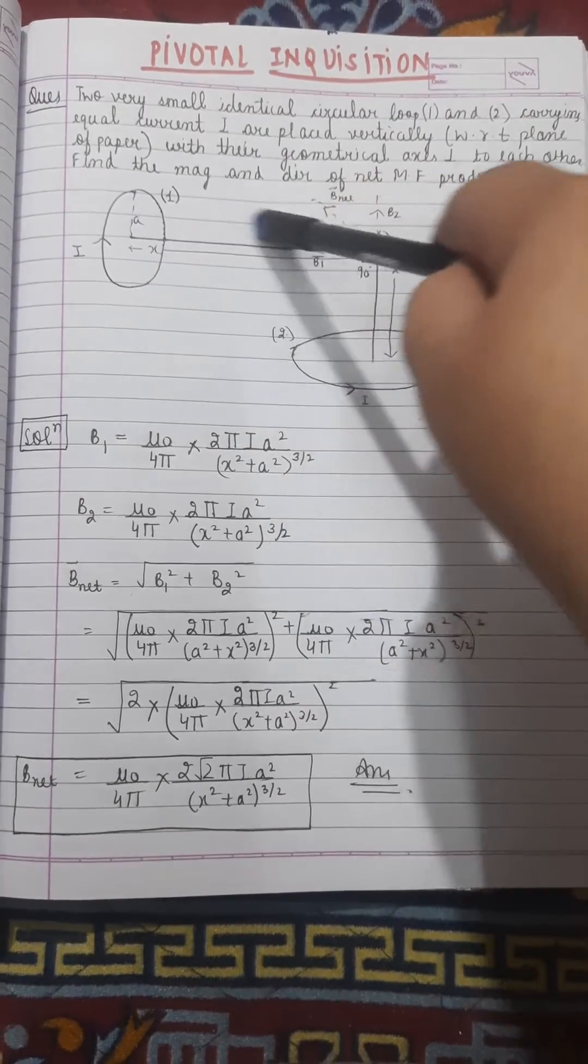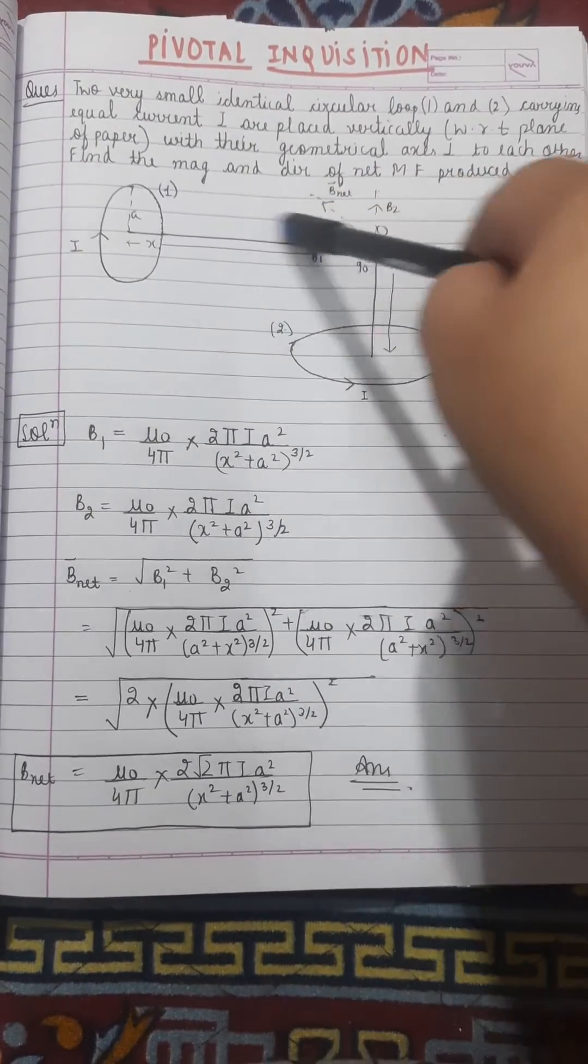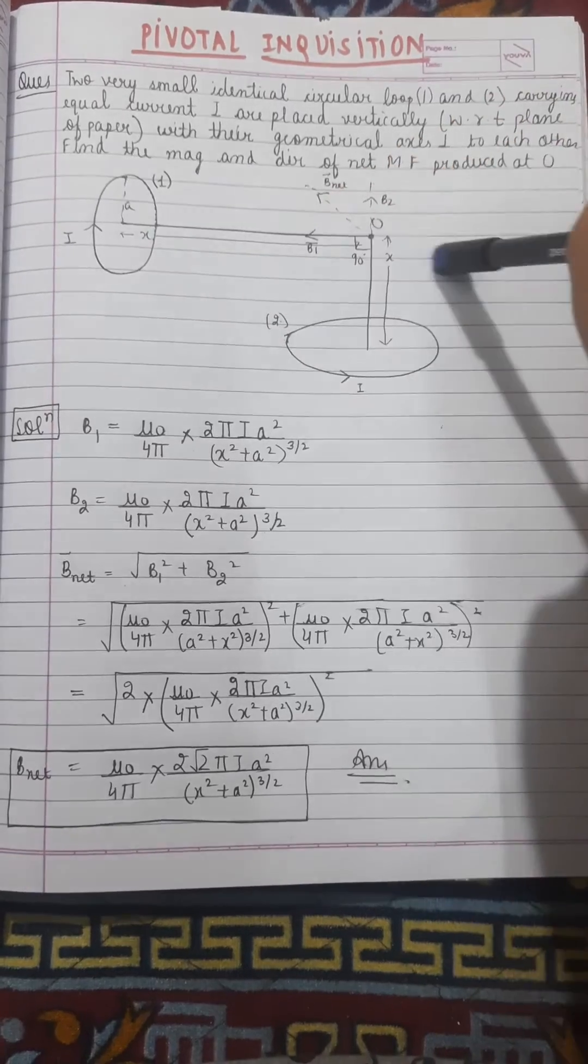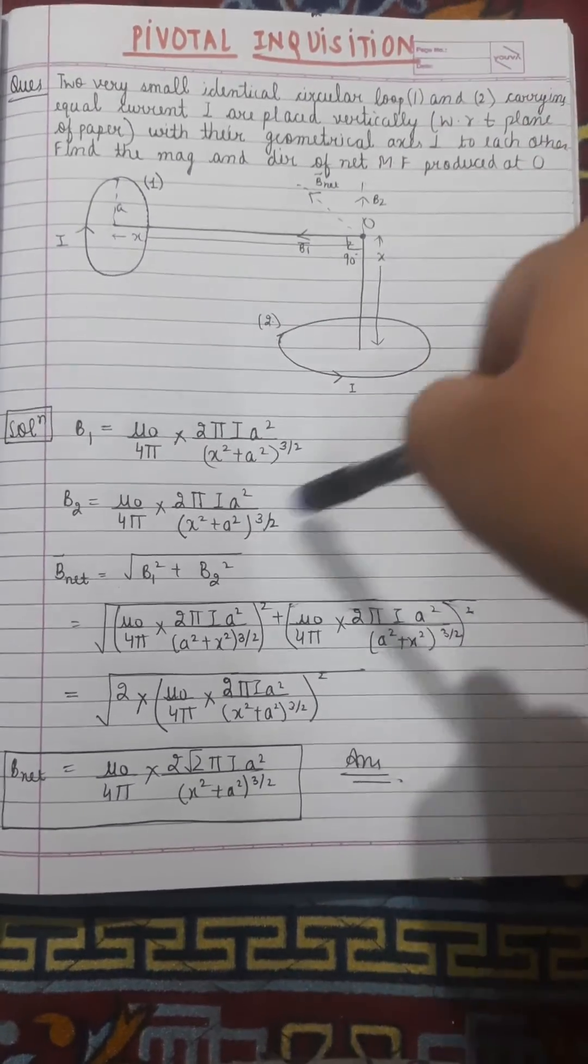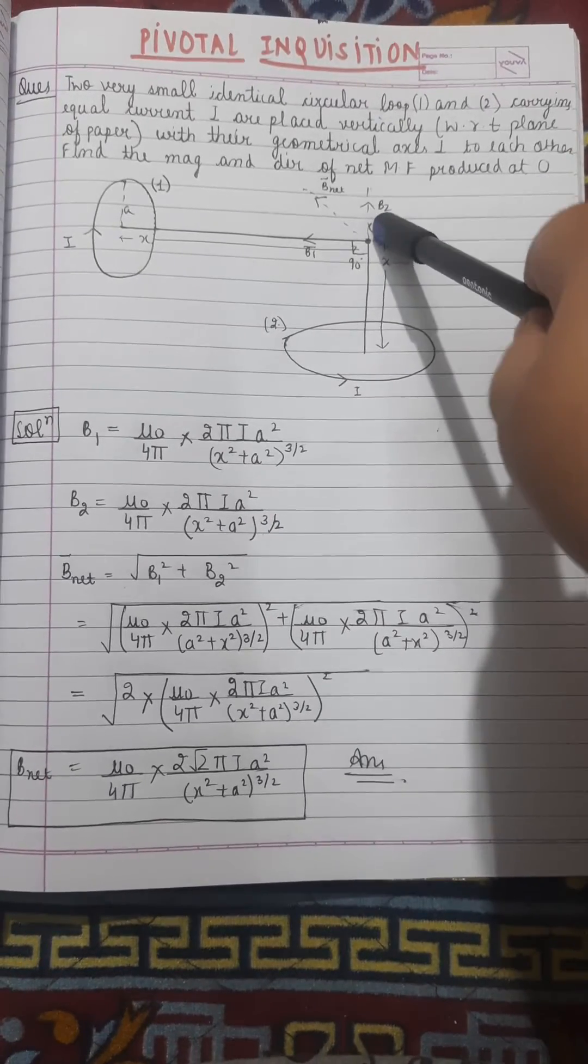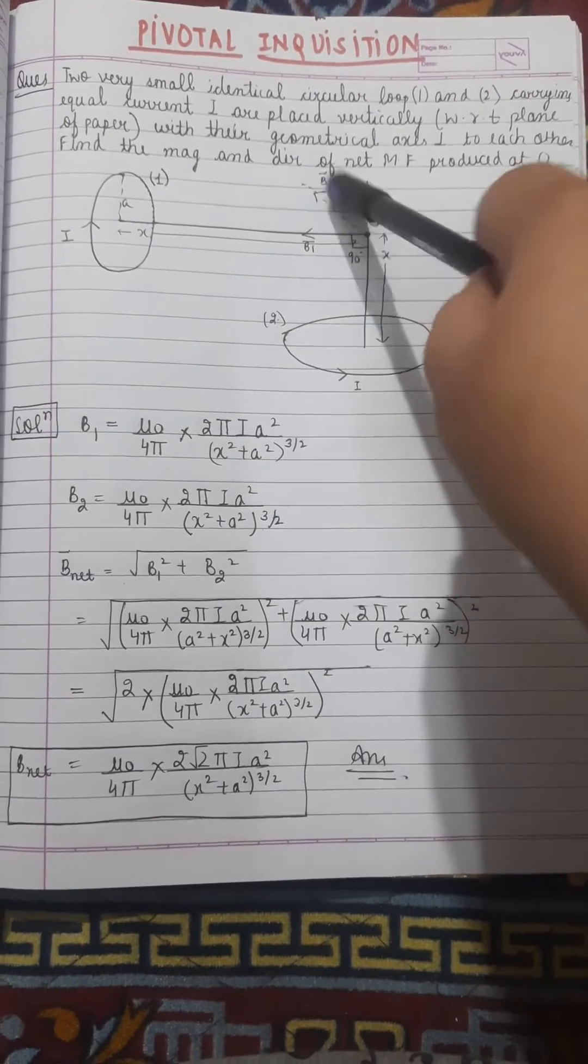If you use Pythagorean theorem, x² + r² to the power 3/2 is the distance. Similarly, the value of B₂ will be the same, and the net magnetic field B_net will be √(B₁² + B₂²).